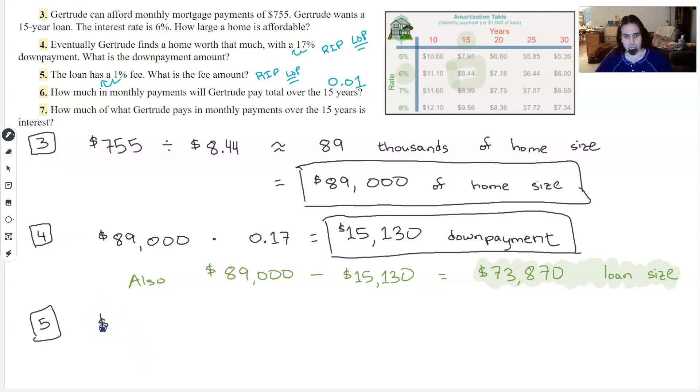So the amount of the down payment was $15,130. Multiply it by 0.01. That's also a scoot kind of thing, by the way. So $151.30.